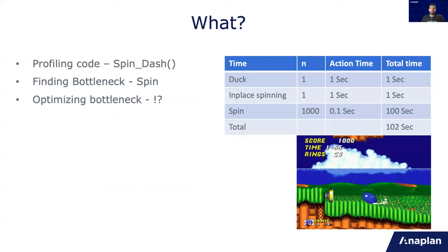So first, a short example. In the game Sonic, there is a move called a spin dash, which is how Sonic moves forward really fast. It consists of three items, which is basically like profiling the move. So the first thing Sonic needs to do is duck. Then it needs to be in place spinning to gain traction.